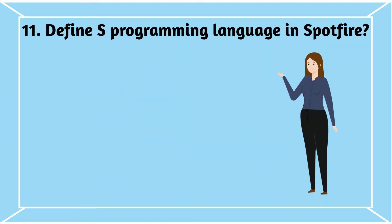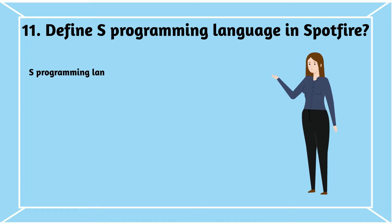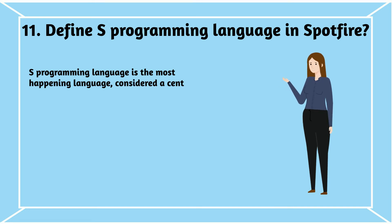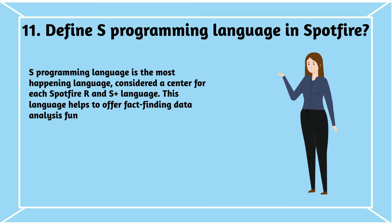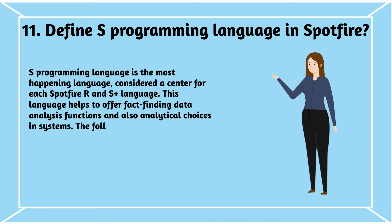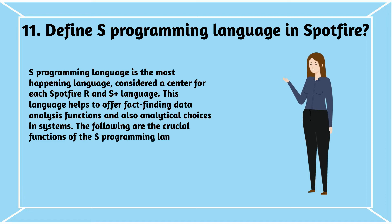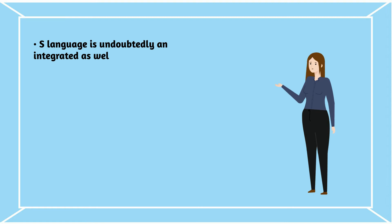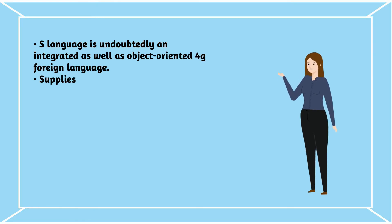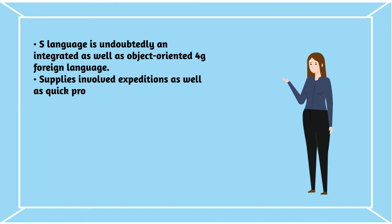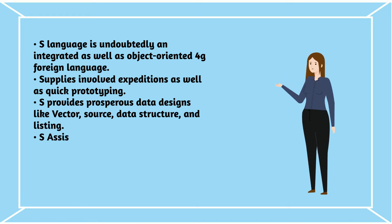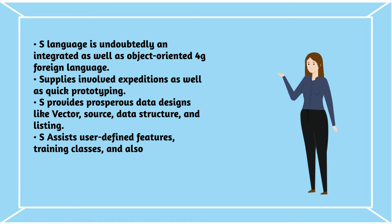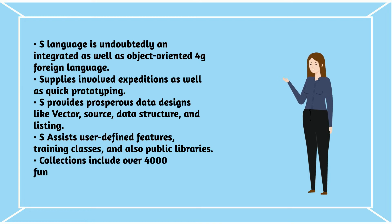Question 11: Define S-programming language in Spotfire. S-programming language is the most prominent language, considered a center for both Spotfire R and S-plus language. This language helps offer fact-finding data analysis functions and analytical choices in systems. Key functions include: S-language is an integrated and object-oriented language; it supplies rapid prototyping; provides rich data models like vector, source, data structure, and list; supports user-defined features, classes, and libraries; and collections include over 4,000 functions for data manipulation and integration.